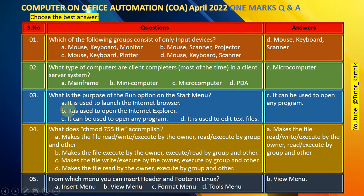Question number 3: What is the purpose of the Run option on the Start menu? A. It is used to launch the internet browser. B. It is used to open Internet Explorer. C. It can be used to open any program. D. It is used to edit text files. The right answer is C — it can be used to open any program.